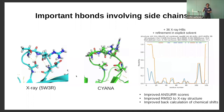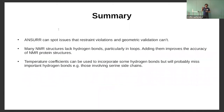To summarise the first part: ANSWER can spot issues that restraint violations and geometrical validation can't — remember, my initial calculation looked fine by those measures. Many NMR structures lack hydrogen bonds, particularly in loop regions, and adding them will increase the accuracy of your structure. One way to do this is to consider using temperature coefficients, but you're not going to get all the hydrogen bonds that way, and you'll definitely miss hydrogen bonds involving side chains.